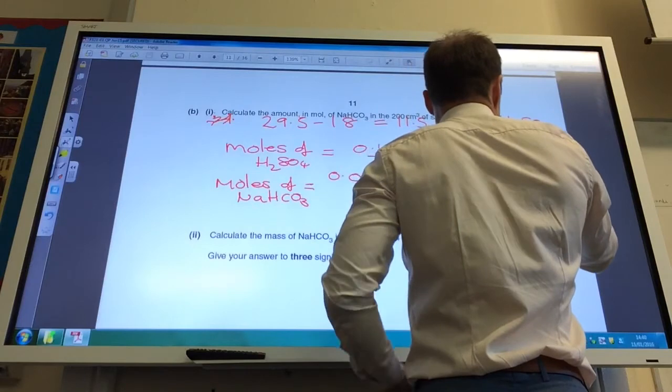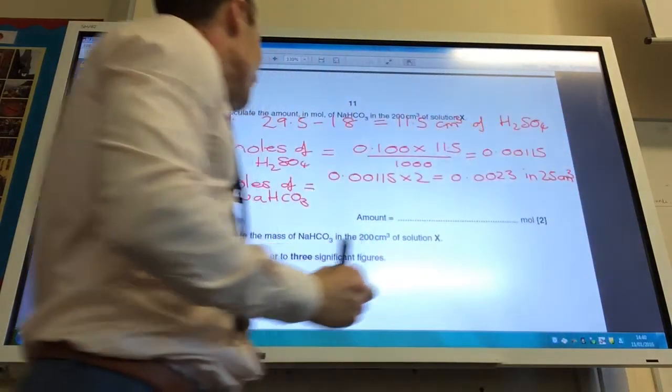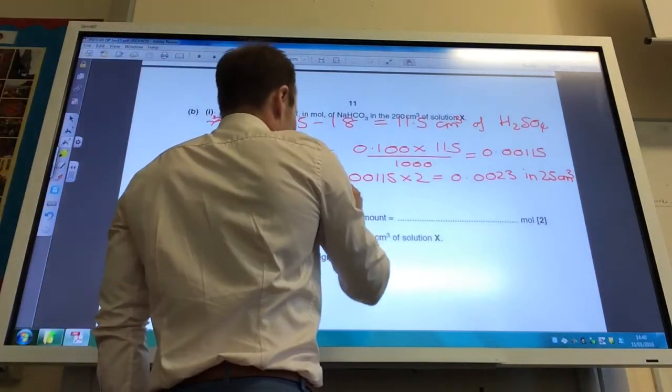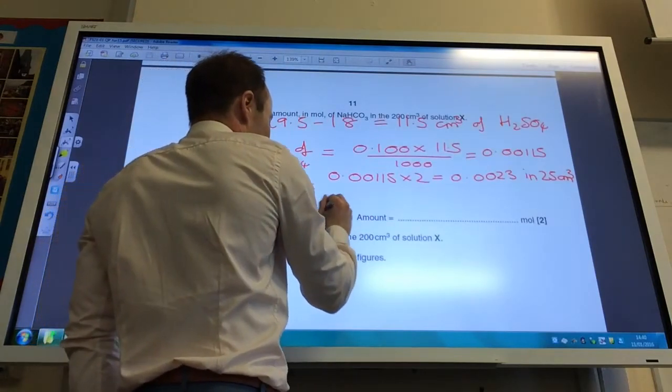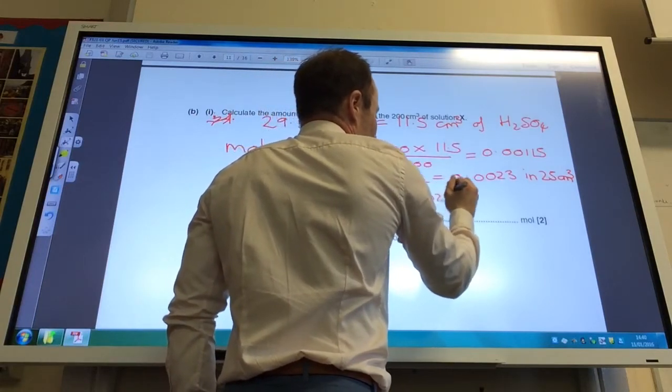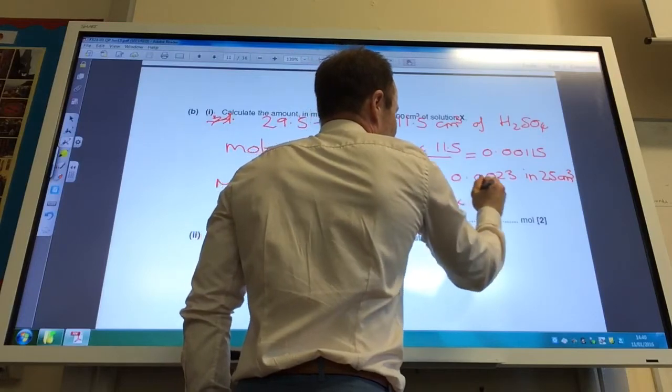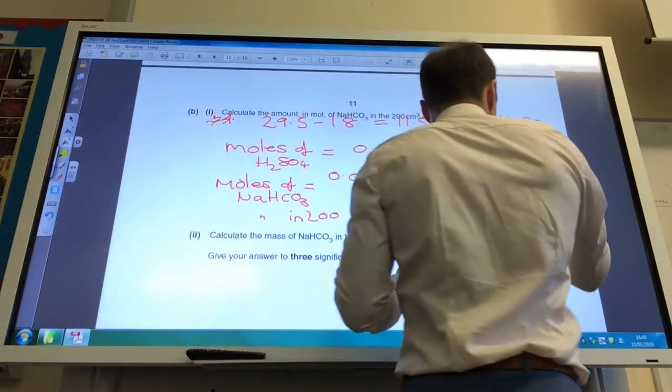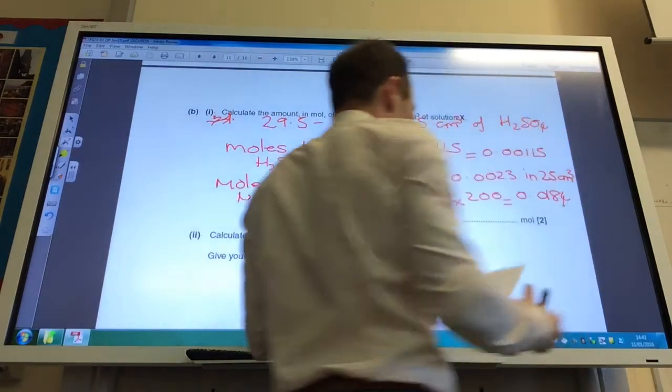And that was in 25 centimeters cubed. They want the amount of moles in 200. So moles of sodium in now 200 is going to equal 0.0023 divided by 25 times by 200. And that comes to 0.0184 moles.